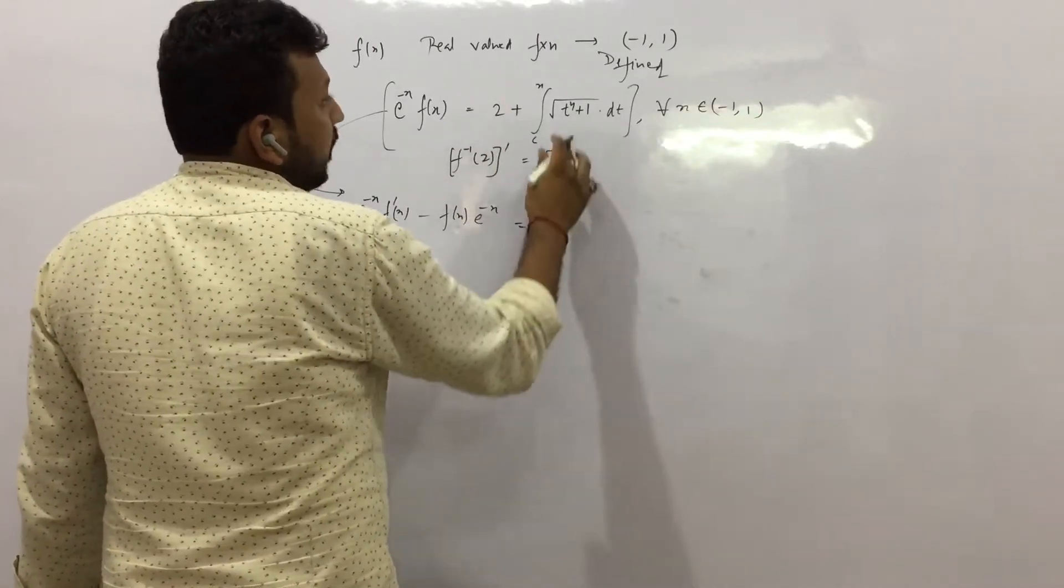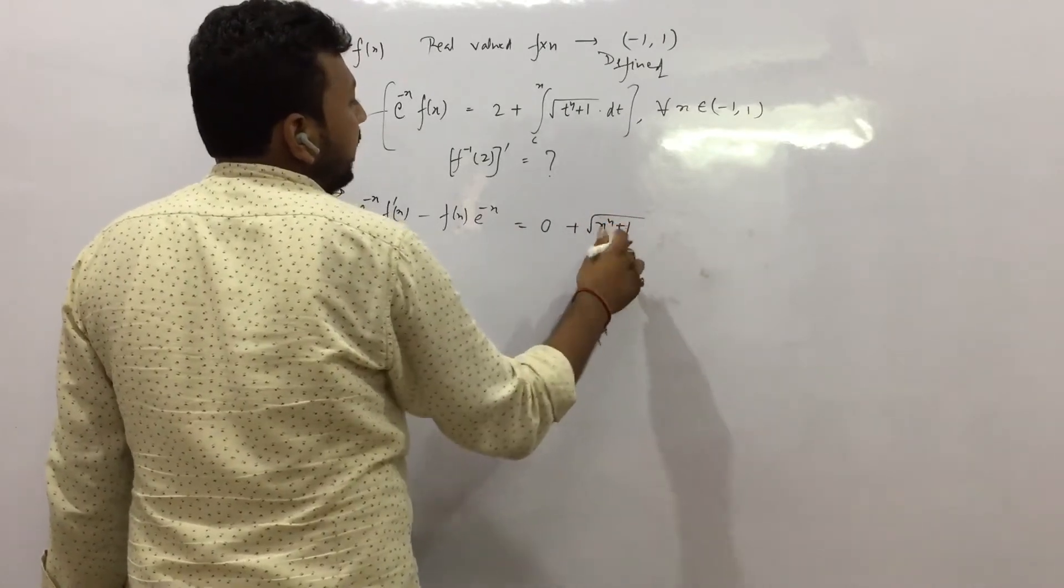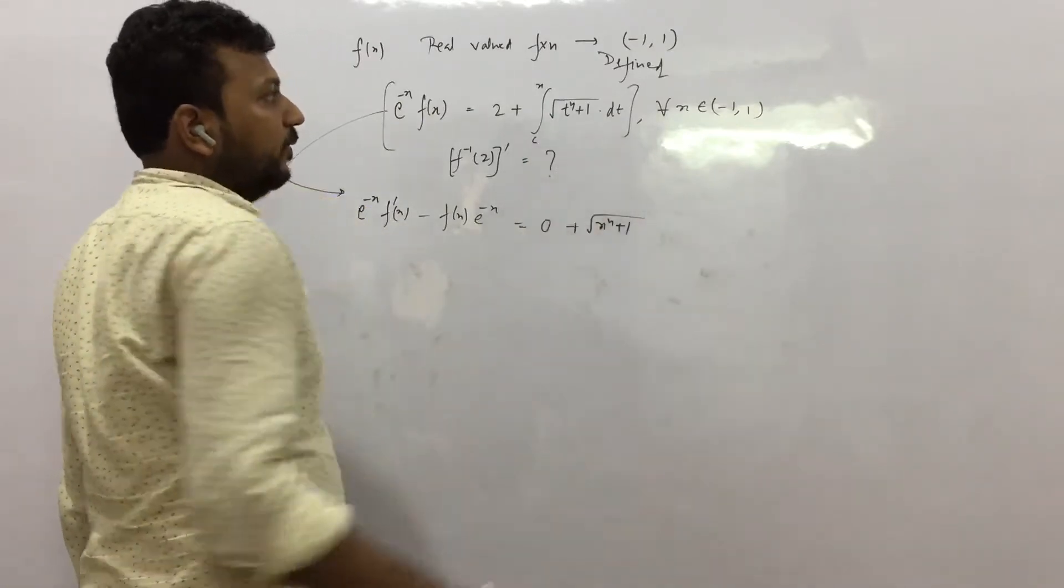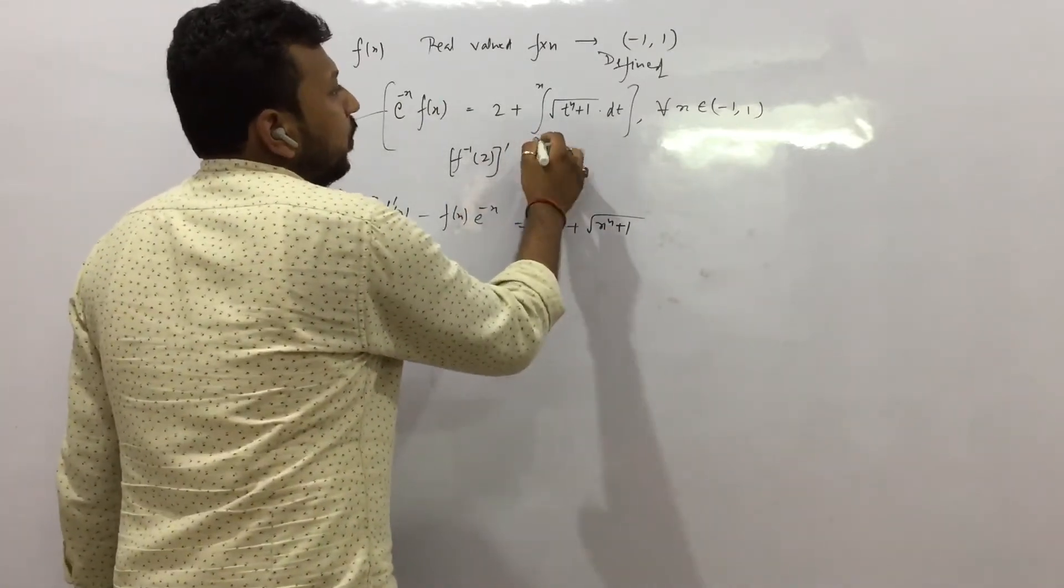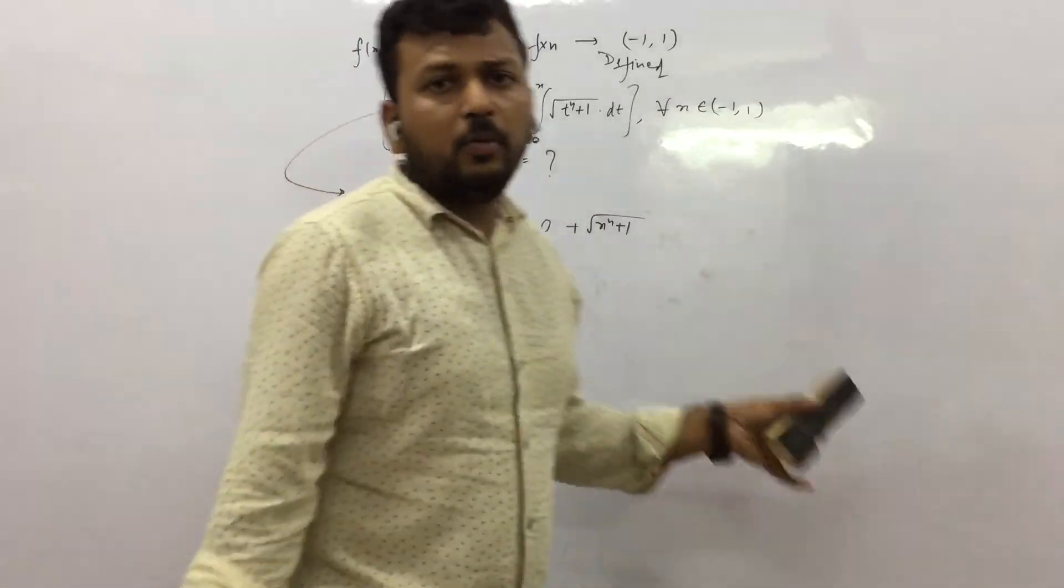Derivative of 2 is 0. Derivative of this integral is x to the power 4 plus 1 into x to the power derivative 1 minus 0. So I hope you know the derivative of this integration, this is from 0 to x.